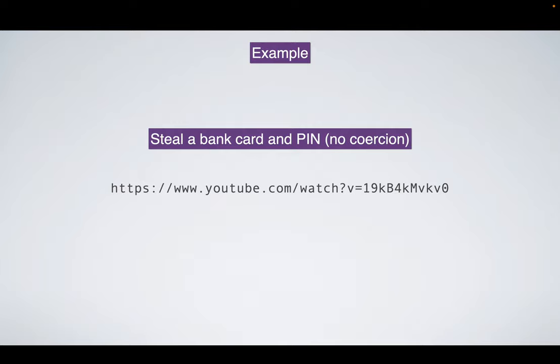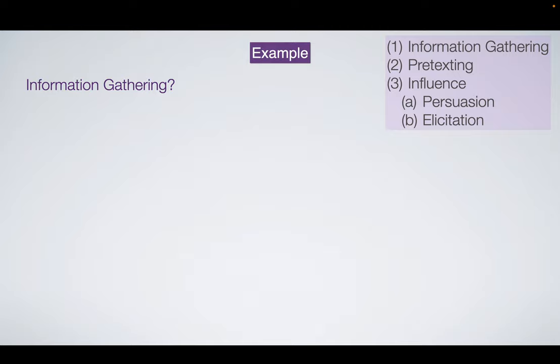After that, we'll go into more of the boring details of going through each of the elements of the framework and working out the theory. So remember the framework is: information gathering, pretexting, and influence — either persuasion or elicitation. Let's start with information gathering.